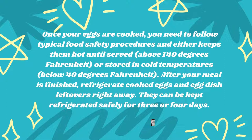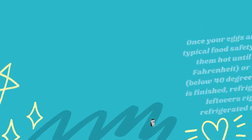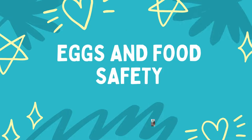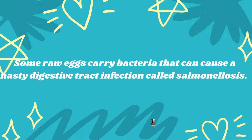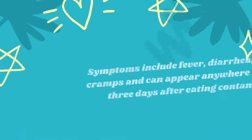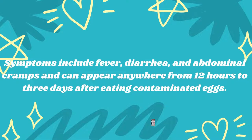If the meal is finished, refrigerate it right away. Our last discussion is all about eggs and food safety. Some raw eggs carry bacteria that can cause a nasty digestive tract infection called salmonellosis. Some of the symptoms include fever, diarrhea, and abdominal cramps, and can appear anywhere from 12 hours to 3 days after eating contaminated eggs.